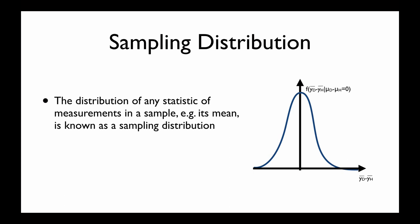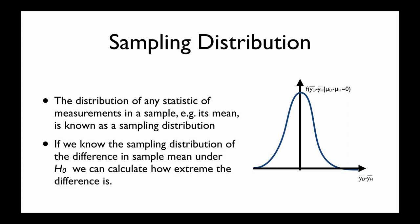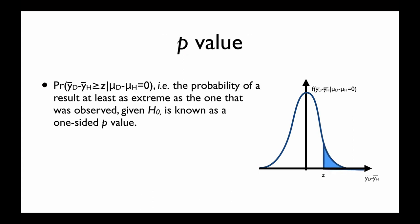The next helper we have is the sampling distribution — a distribution of any statistic of measurements in a sample. In our case it could be the mean, and if we know the sampling distribution of the difference in sample means under the null hypothesis, we can calculate how extreme that difference is. The actual parameter we assess from this is a p-value: the probability of observing a result at least as extreme as the one observed under the null hypothesis. This is known as a one-sided p-value.